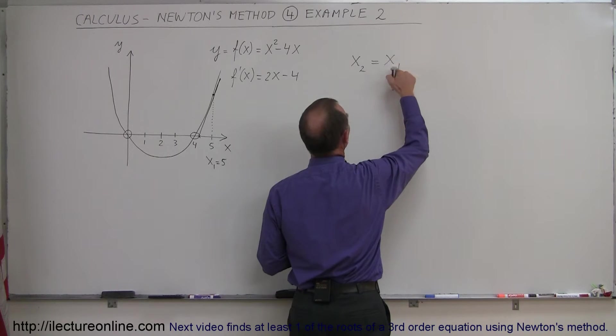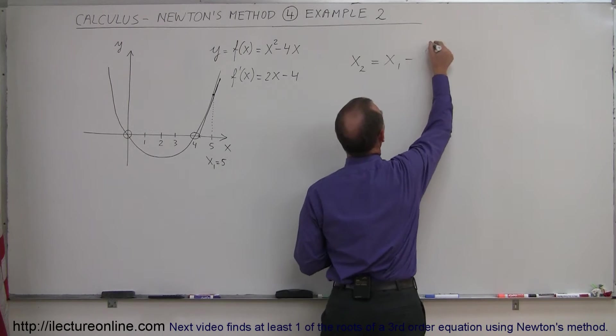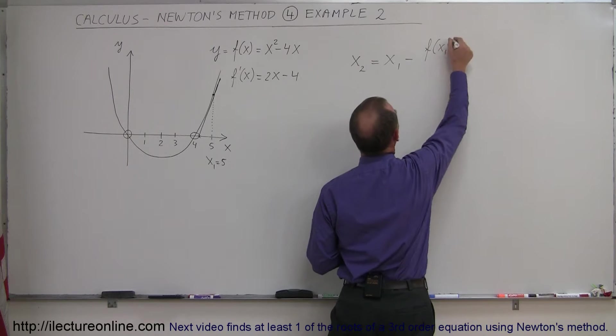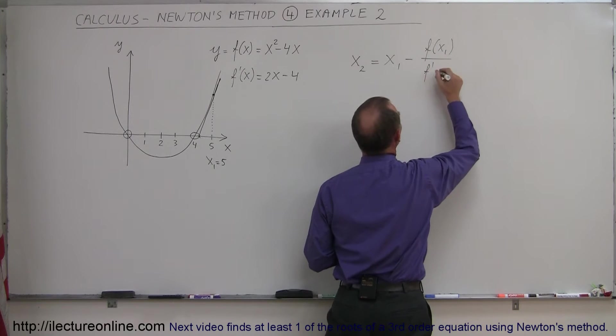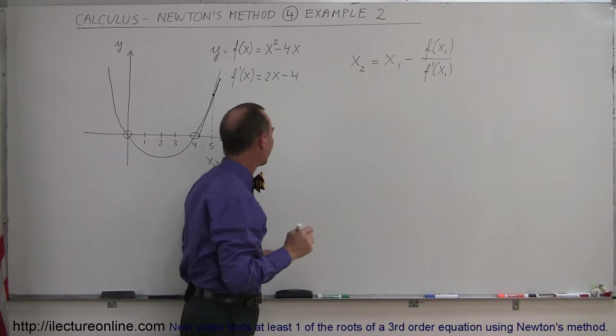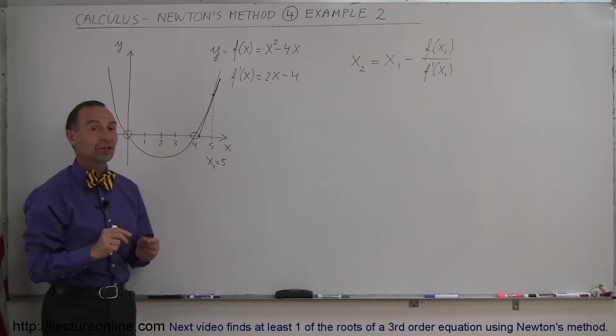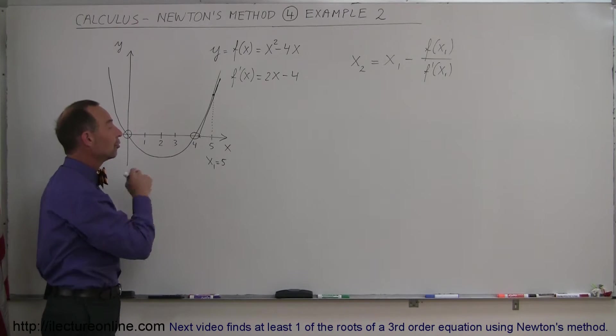x2 equals x1, which is your trial point, minus the function evaluated at x1, divided by the derivative of the function evaluated at x1. So our first point is x1 equals 5. So let's see if we find the root using that method.